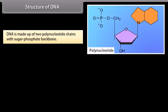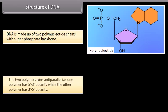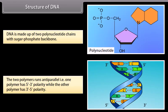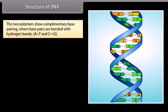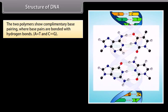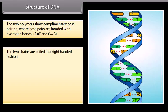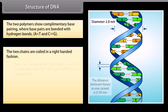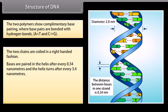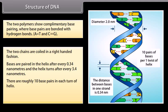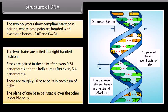Structure of DNA. DNA is made up of 2 polynucleotide chains with a sugar-phosphate backbone. The two polymers run anti-parallel — one polymer has 5' to 3' polarity, while the other has 3' to 5' polarity. The two polymers show complementary base pairing, where base pairs are bonded with hydrogen bonds. The two chains are coiled in a right-handed fashion. Bases are paired in the helix after every 0.34 nanometers, and the helix turns after every 3.4 nanometers. There are roughly 10 base pairs in each turn of the helix. The plane of one base pair stacks over the other in the double helix.